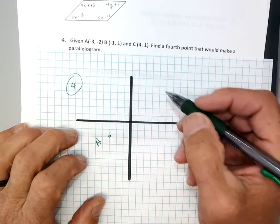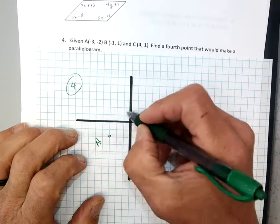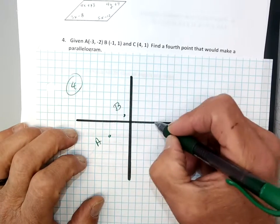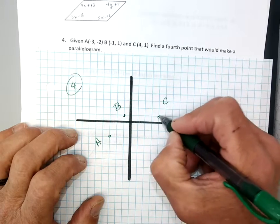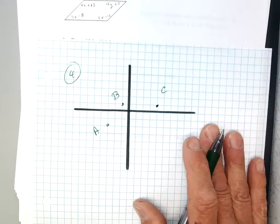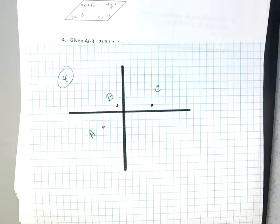And I'm going to graph these. I'll go first negative 3, negative 2. You could have asked for that. There's a. Um, negative 1, 1. B, and 4, 1. There's c. All right. Now, there really are, believe it or not, three possible answers. We only need one. We only need the easiest one.